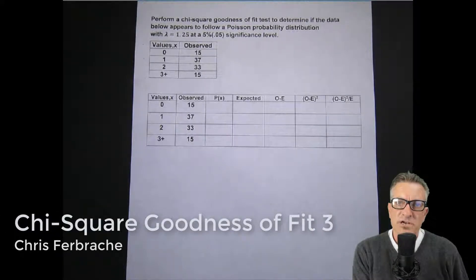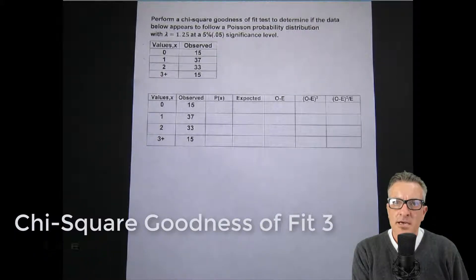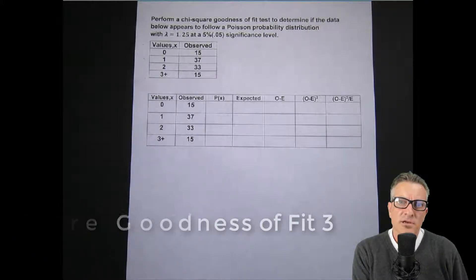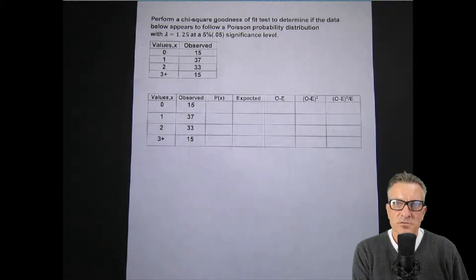Hi, this is Christopher Boucher, and I'm going to review a chi-square goodness of fit test. In this one, we're going to use the Poisson distribution, which for certain reasons could be a little bit more difficult—at least more difficult than basic dice examples.